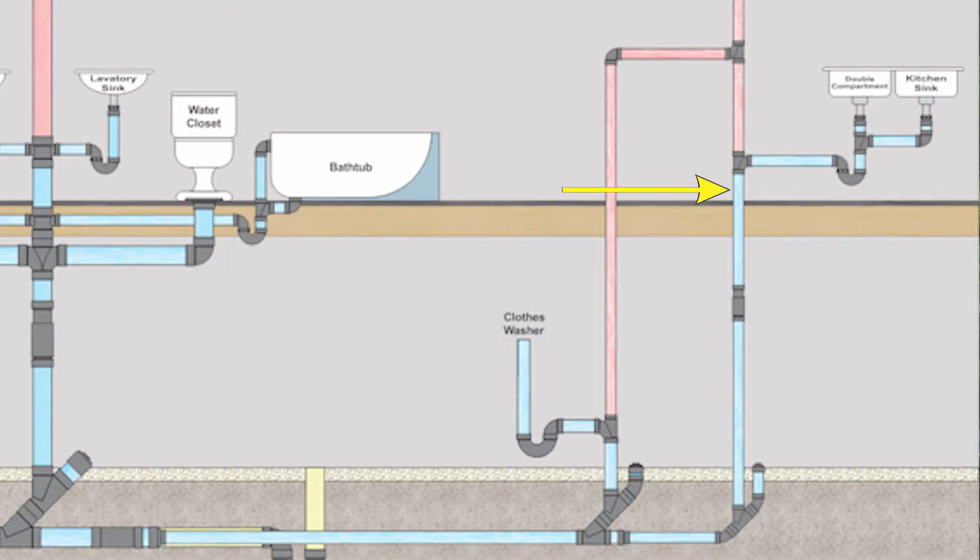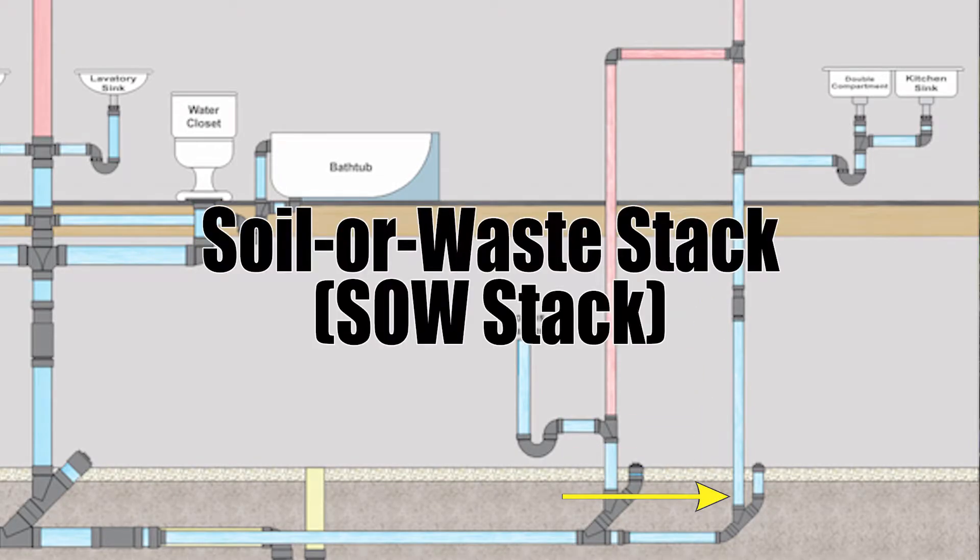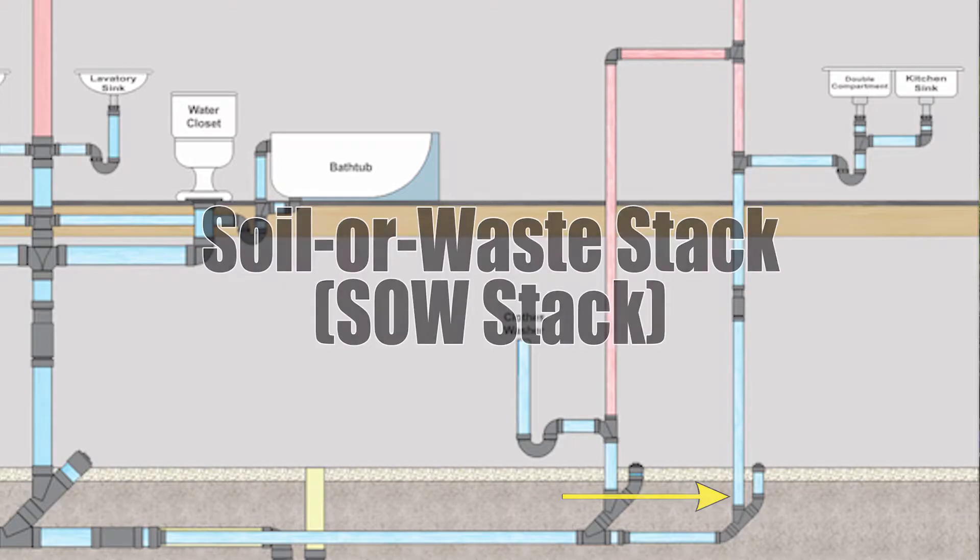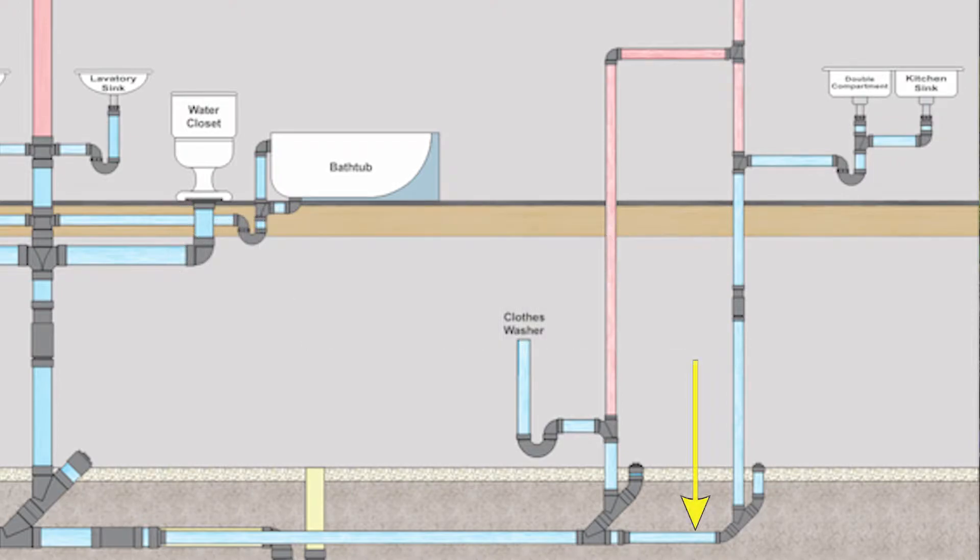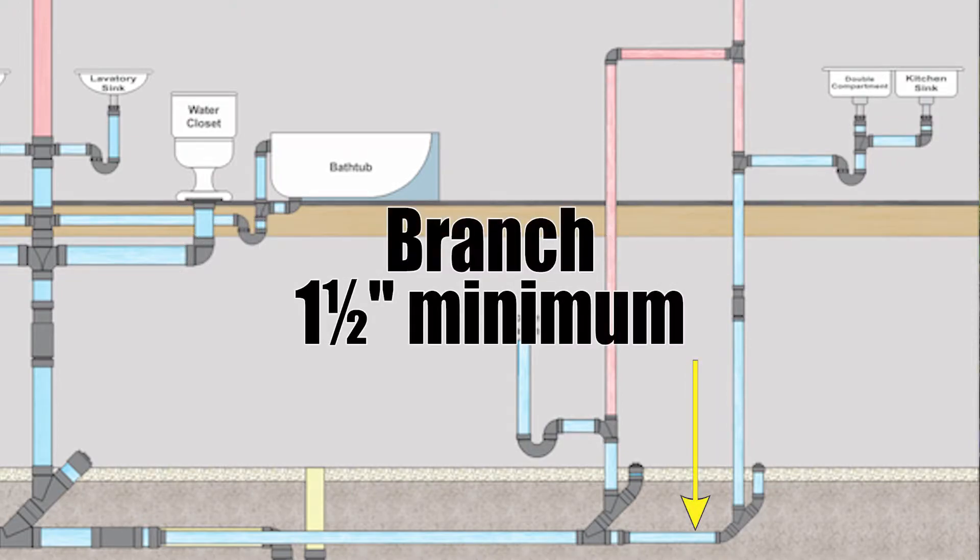Now look at the drain though, it drains down through a full story that makes that a soil away stack. Now the only thing draining into that soil away stack is the kitchen sink so it too will be one and a half inches minimum. At the base of that soil away stack we have a pipe that goes horizontal that's called a branch. That is only serving that kitchen sink so it too will be one and a half inches minimum.